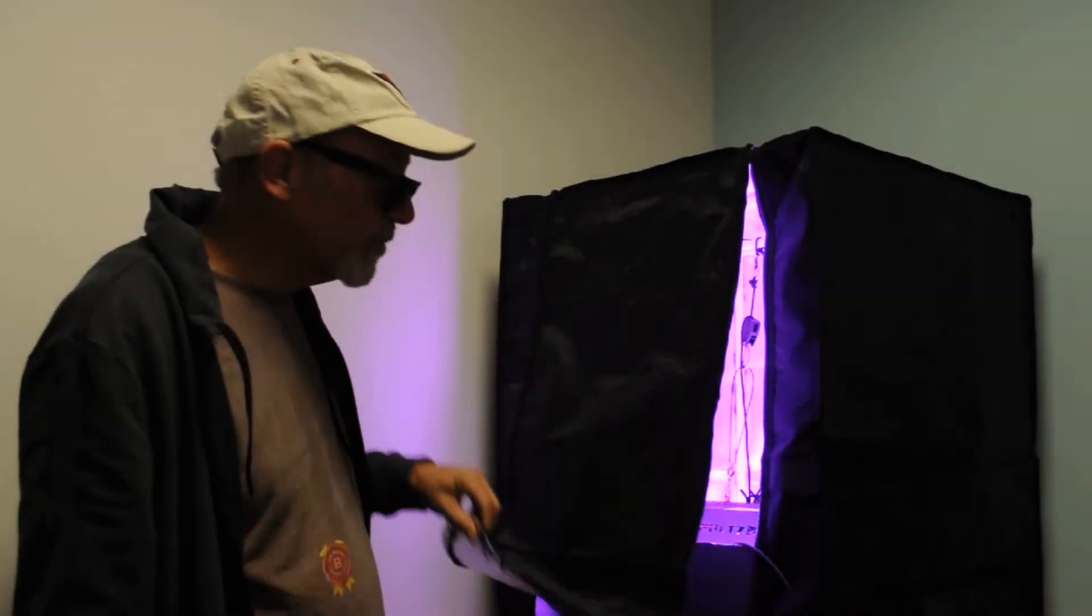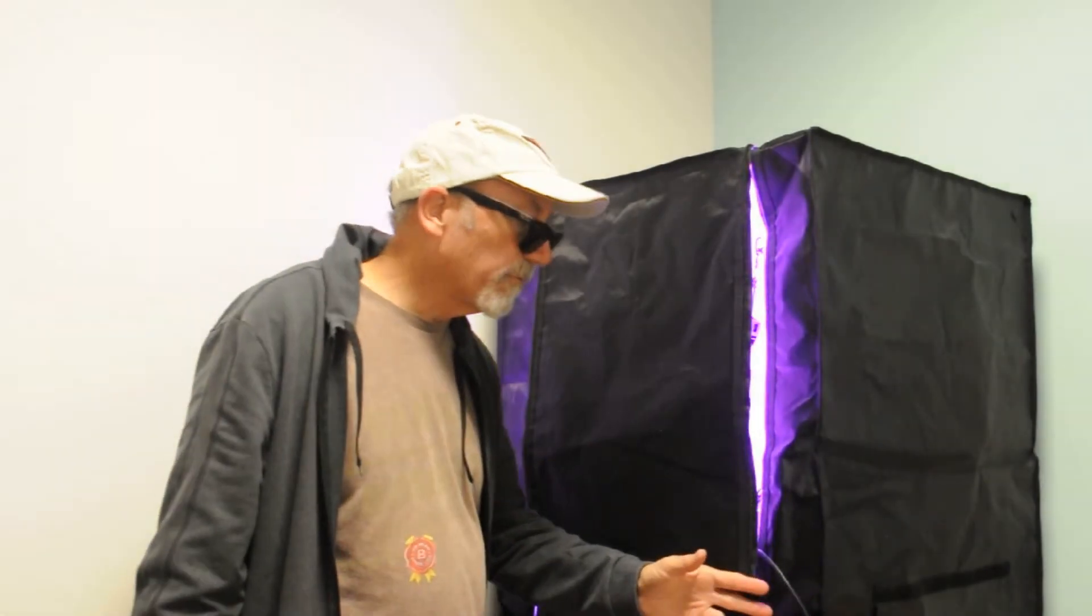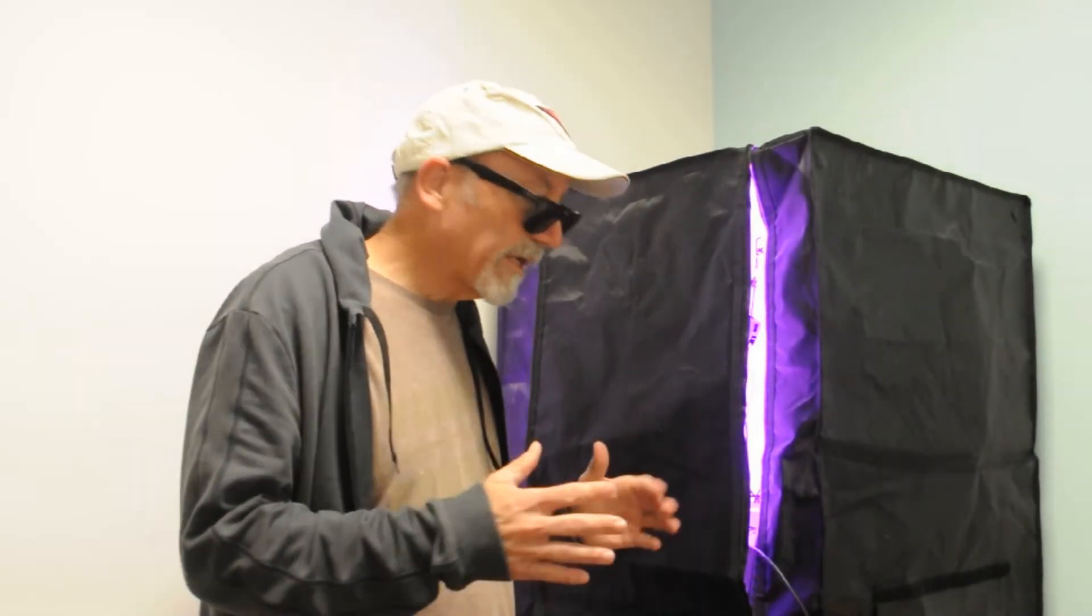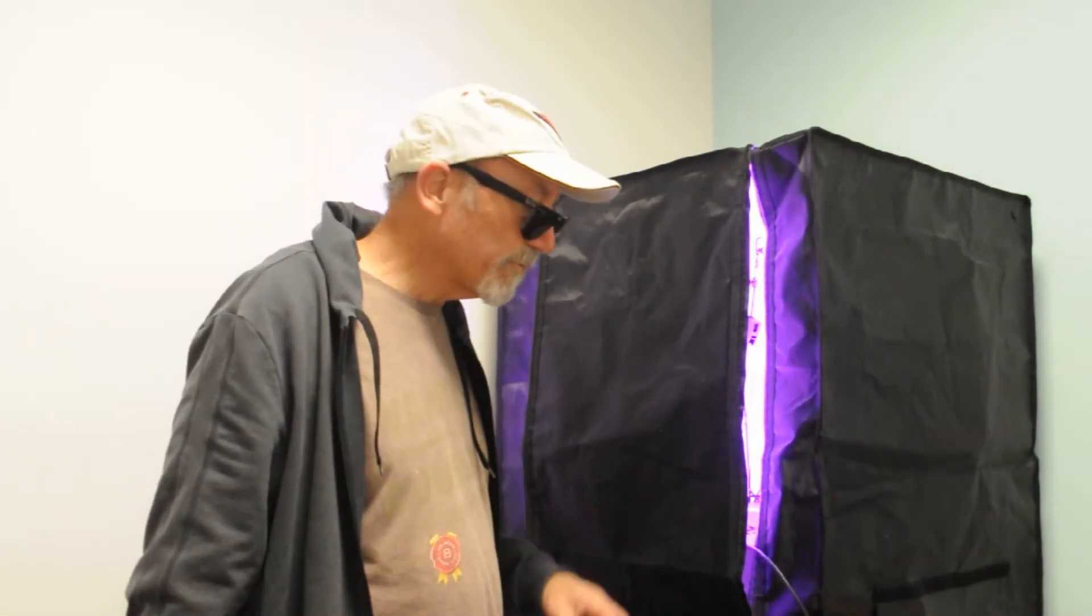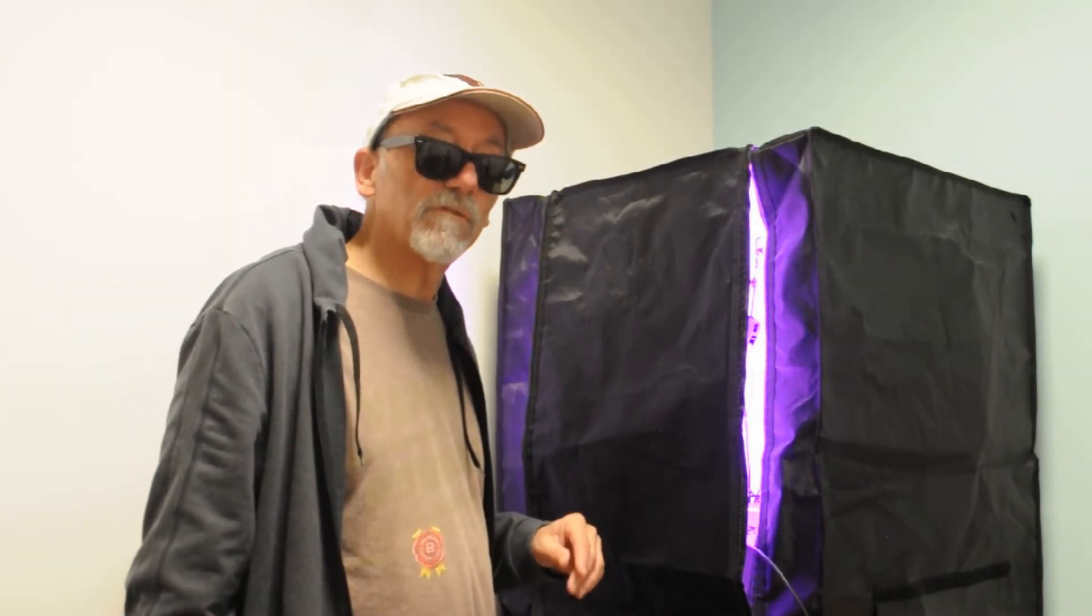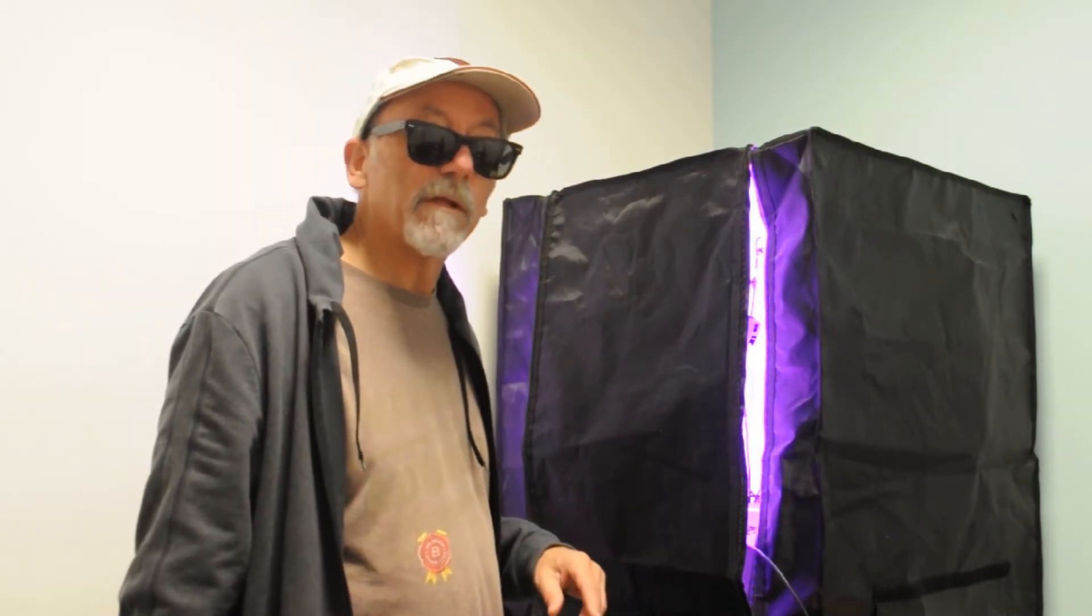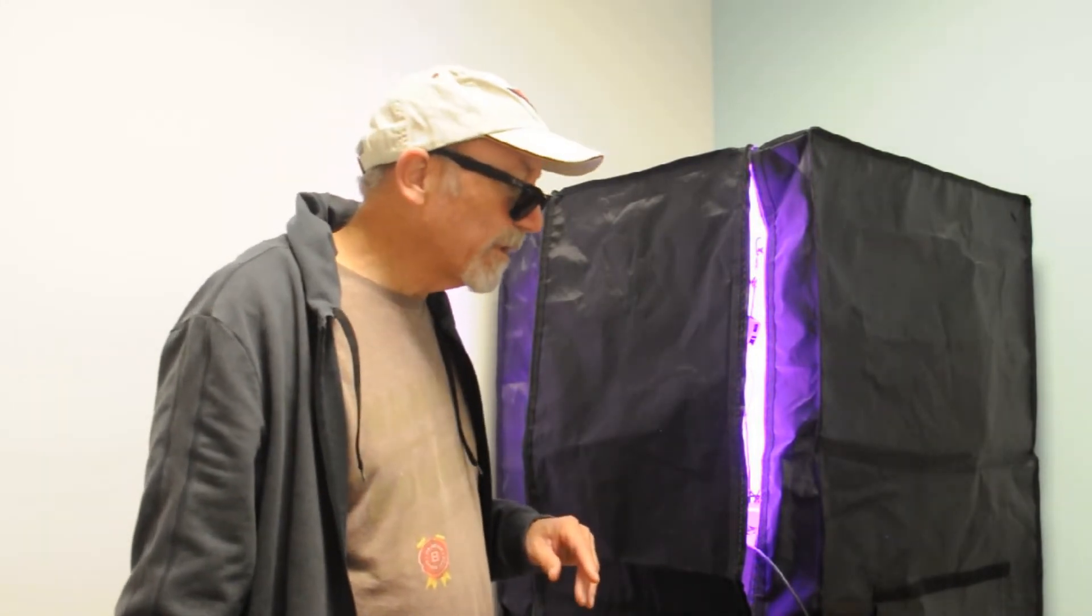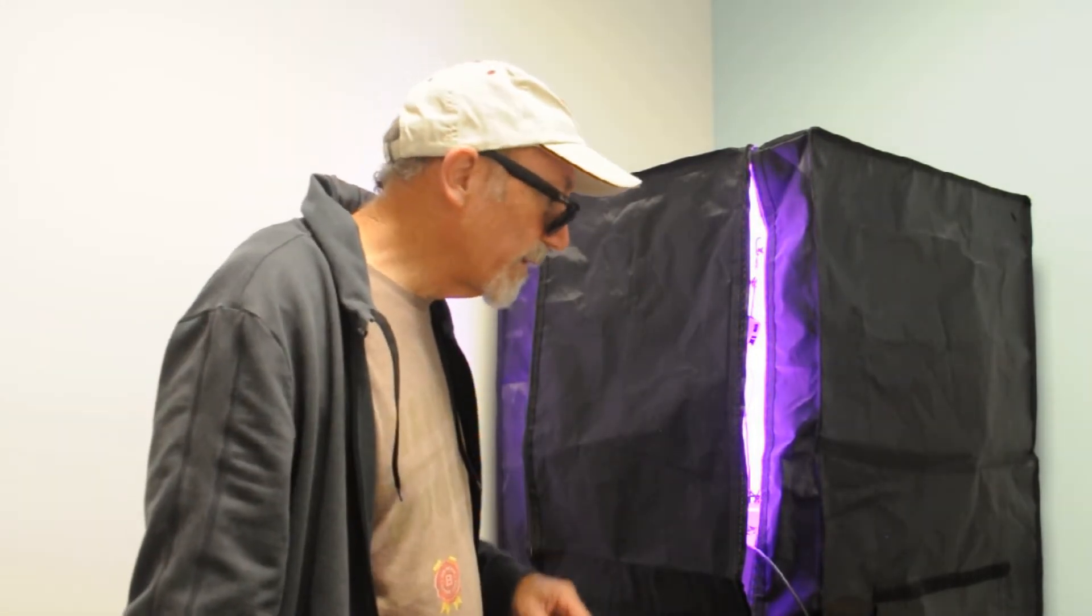And then we also, when we take our measurements, we lower the flap on the tent. So we're confident that all the light is going to be kept inside and we're going to get very accurate measurements. Especially since we'll be using the Apogee MQ500, which is the state-of-the-art quantum flux meter. So like I said, our numbers will be very good and you can feel confident with our readings.